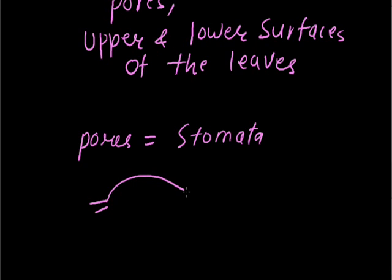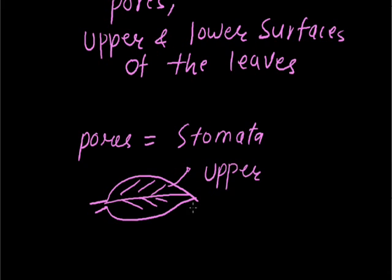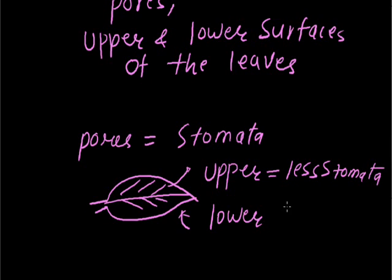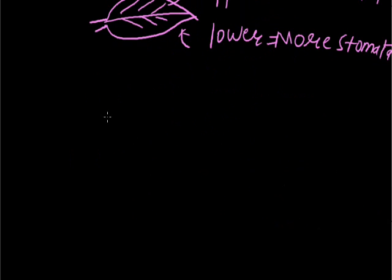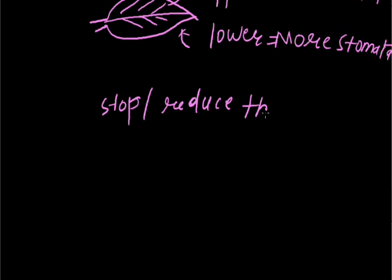If we draw the structure of leaves: this is the upper surface and this is the lower surface. The number of stomata will be less on the upper surface, and the number is more abundant on the lower side. Because the number of stomata, if we draw the structure of stomata, helps to stop or reduce the rate of transpiration.